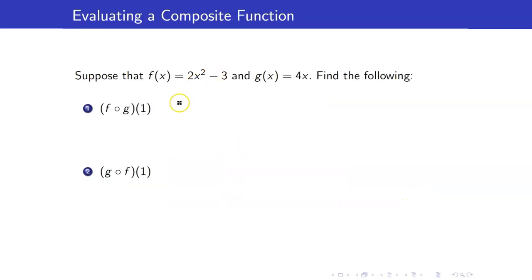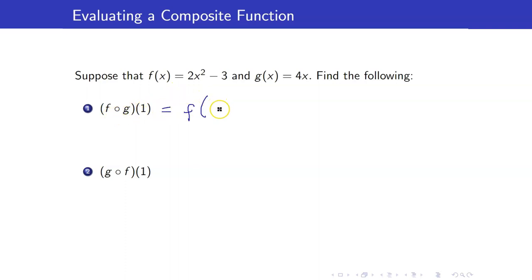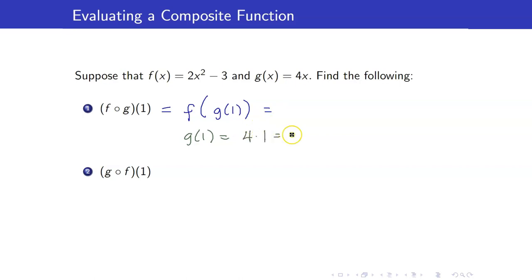Let me illustrate this. Suppose that f of x is 2x squared minus 3 and g of x is equal to 4x. Let us find f circle g of 1. By definition, this is f of g of 1. Let me first compute g of 1. g of 1 is equal to 4 times 1, so therefore this is equal to 4.